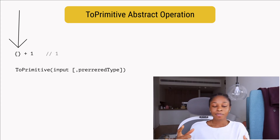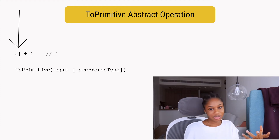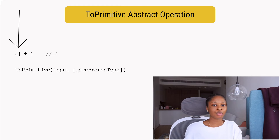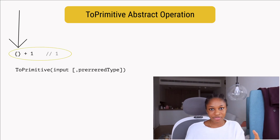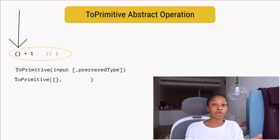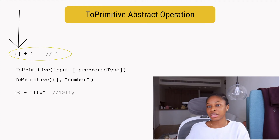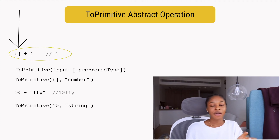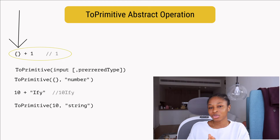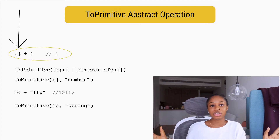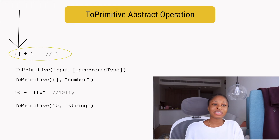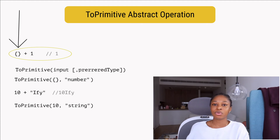The hint that gets sent depends on the type of operation you're performing. If you're performing a numeric operation and ToPrimitive gets invoked, it will send number as the hint. If you're working with strings, it will send string as the hint. Whenever ToPrimitive gets invoked without a hint, it sends default — meaning 'give me whatever you have' — and that defaults to number.